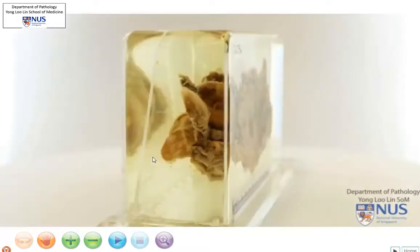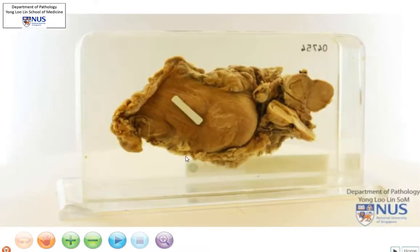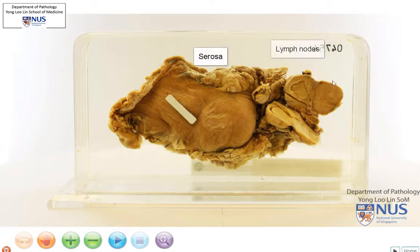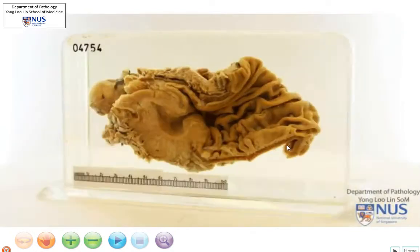Let's turn around and orientate ourselves a little bit more. Over here at the posterior surface, we're looking at the serosa of the stomach, and these are some very enlarged lymph nodes — we'll come back to them later.